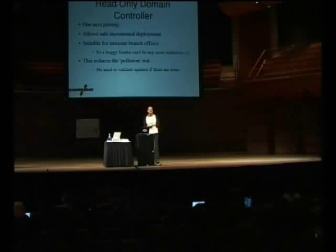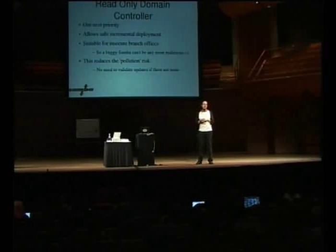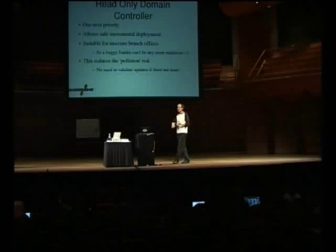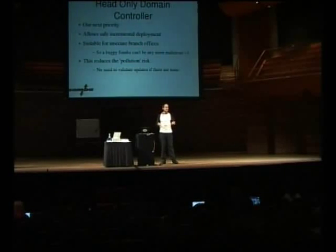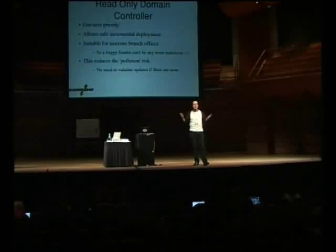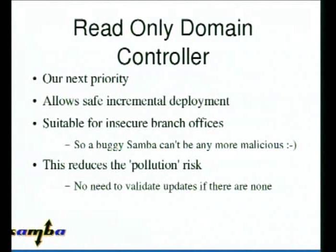The read-only domain controller is our next task in the replication area. In Windows 2008 functional level, there's the ability to say that some domain controllers have copies of the database — perhaps apart from the passwords — but they can't write those changes back. The idea is that you put this in an insecure branch office and if someone breaks in and subverts the server, it can't break back into the corporate network. It also means buggy Samba can't infect the corporate network with incorrect data. We're hoping to do that in the next few weeks and making very good progress.